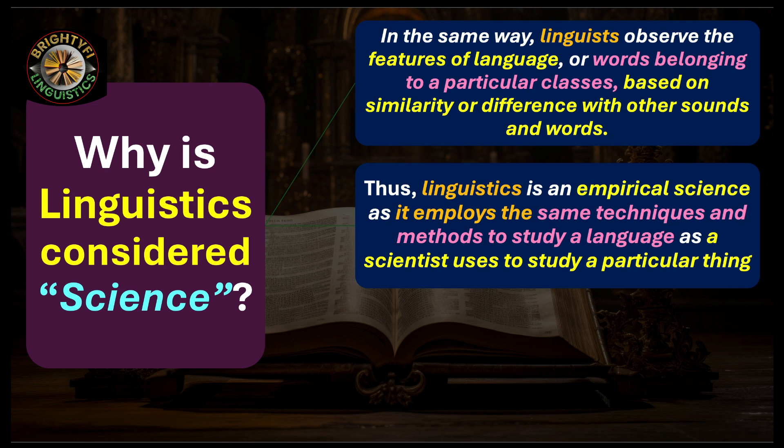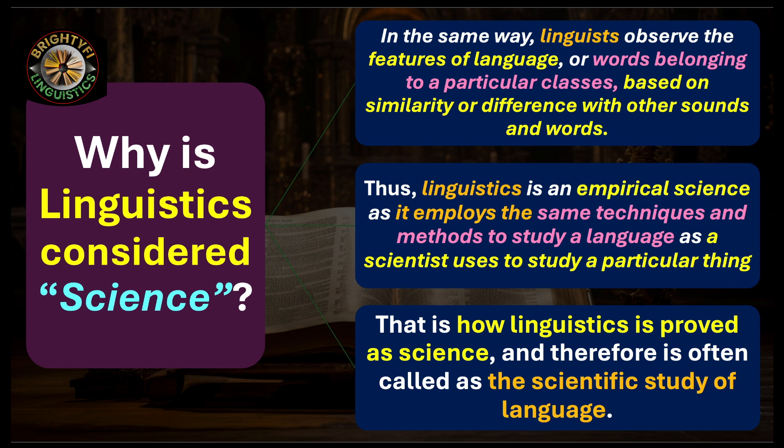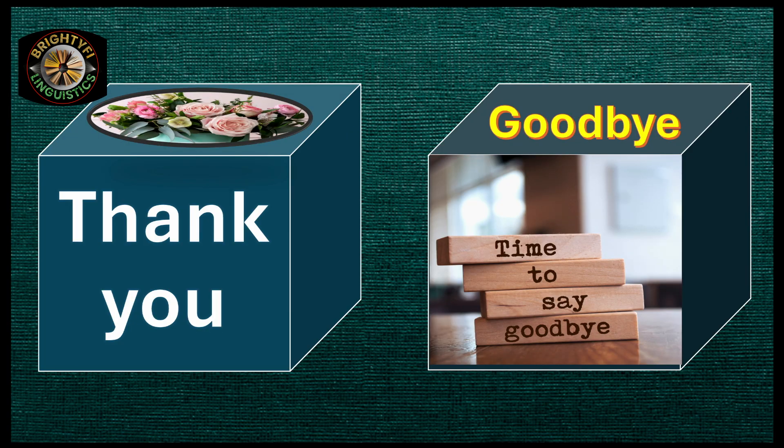Therefore, linguistics is an empirical science, as it applies the same techniques and methods to study language as a scientist uses to study a particular thing. That is how linguistics is proved as science, and is therefore often called the scientific study of language. That is basically the idea about why linguistics is considered science and not art. Hope you understand the concept — thank you and goodbye.